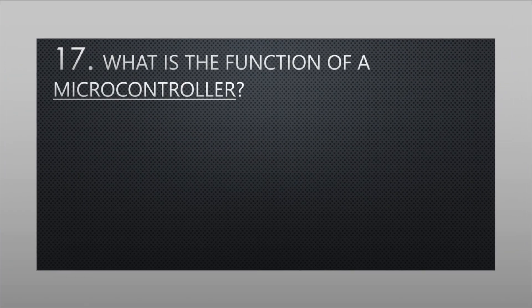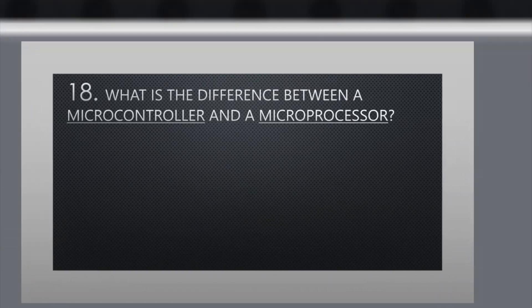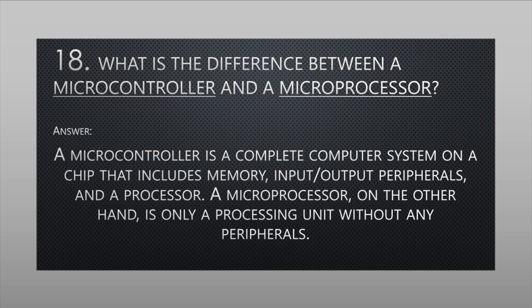What is the function of a microcontroller and a microprocessor? A microcontroller is a complete computer system on a chip that includes memory, input/output peripherals, and a processor. A microprocessor, on the other hand, is only a processing unit without any peripherals.